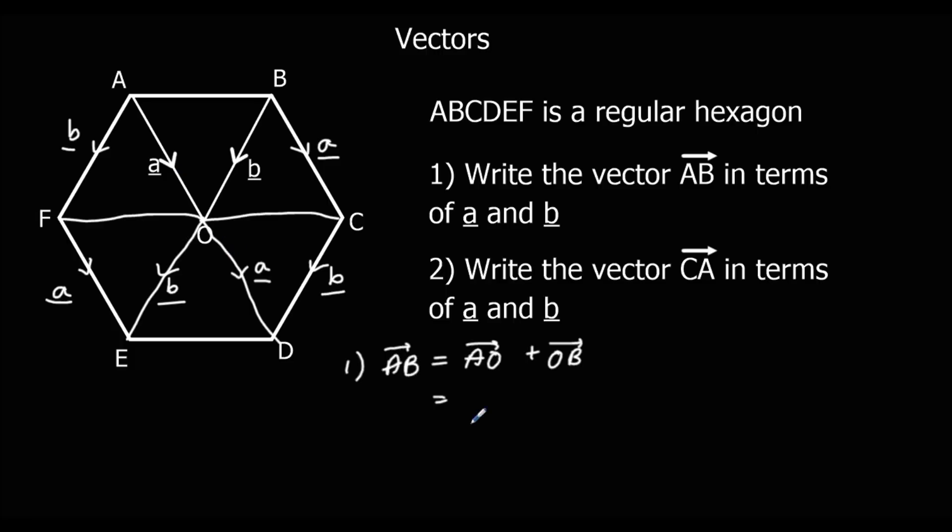So A to O is called a. O to B is backwards along the b vector. So B to O is called b, so O to B must be minus b.